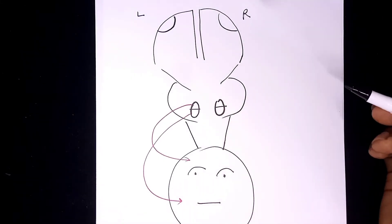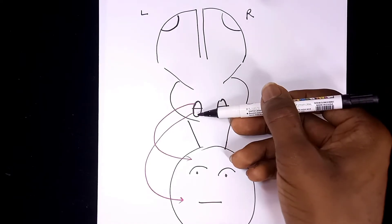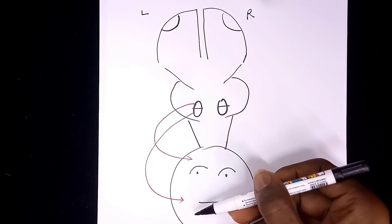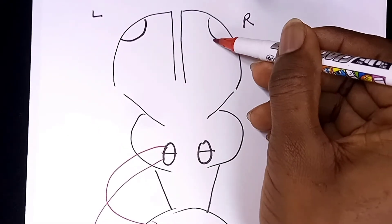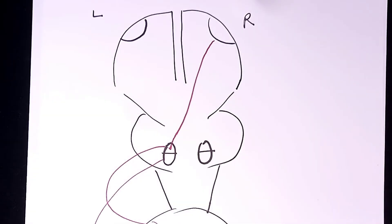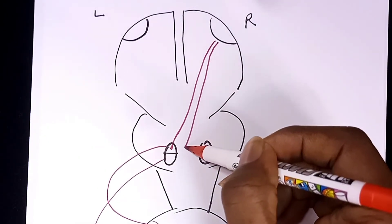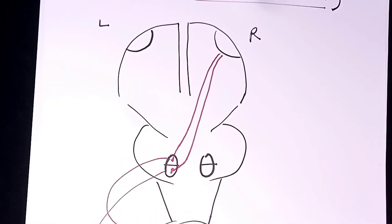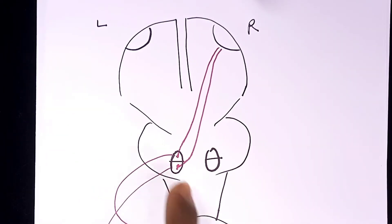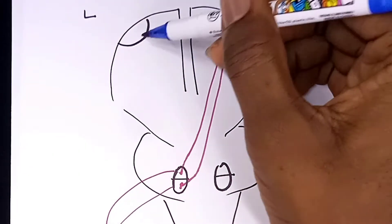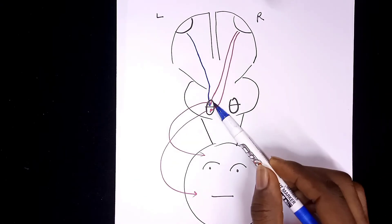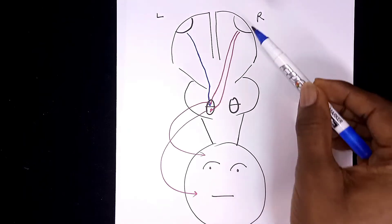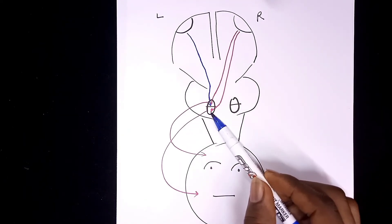To consciously control facial expression, fibers come from the motor area of the brain — Brodmann area 4 of the motor cortex — to synapse on the facial nerve nucleus, which further innervates the muscles of facial expression. The fibers from the right hemisphere synapse on both the upper and lower parts of the facial nerve nucleus in a contralateral fashion. However, fibers from the left hemisphere only synapse on the upper parts of the facial nerve nucleus.